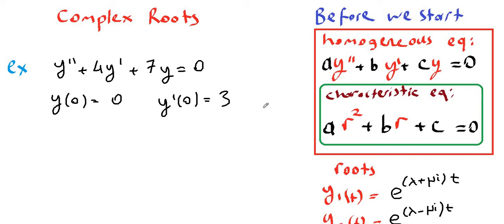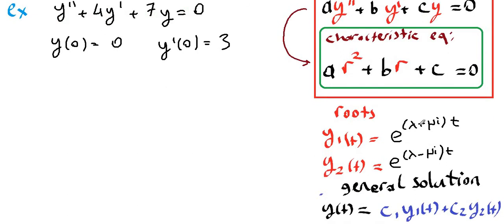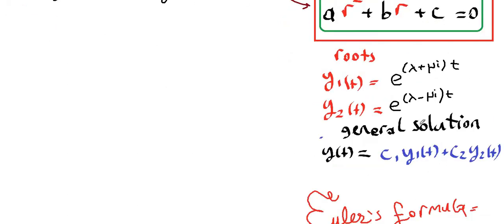Before we start, let's remember: the homogeneous equation is in the form a·y double prime plus b·y prime plus c·y equals 0. If we convert this into the characteristic equation, we obtain a quadratic function. Solving for the roots of this quadratic gives us two complex roots, in the form e to the (λ + μi)t and e to the (λ − μi)t.